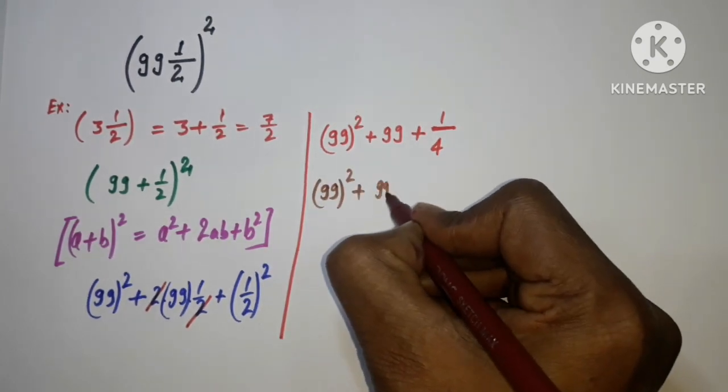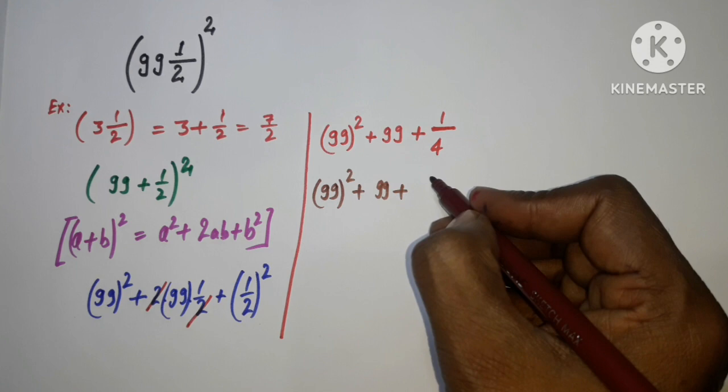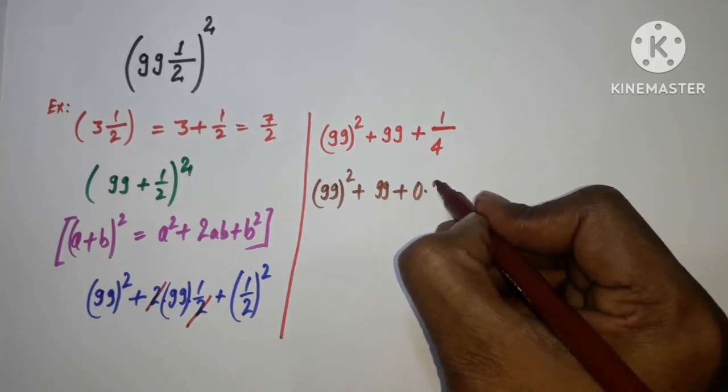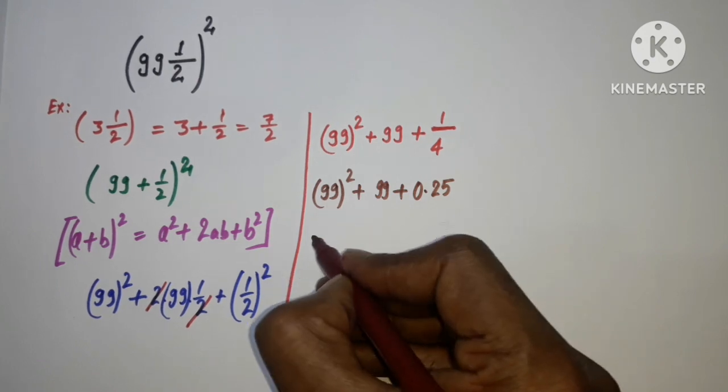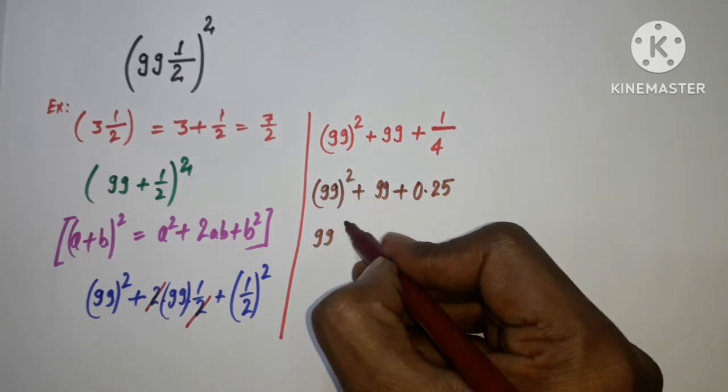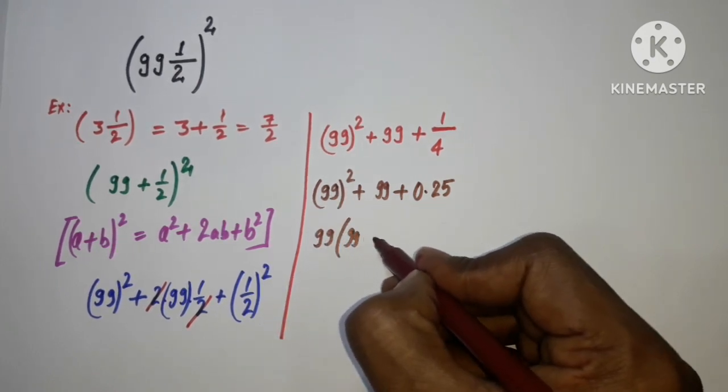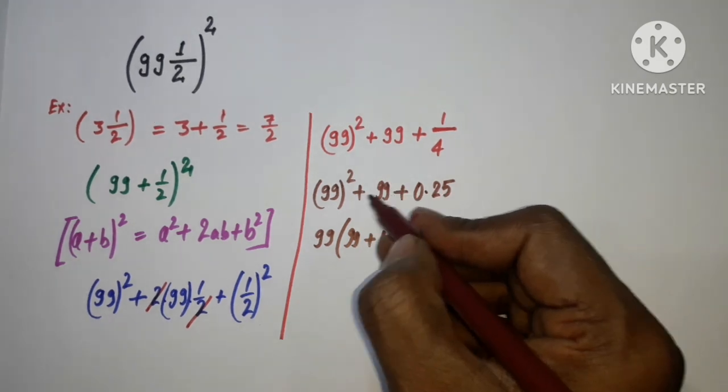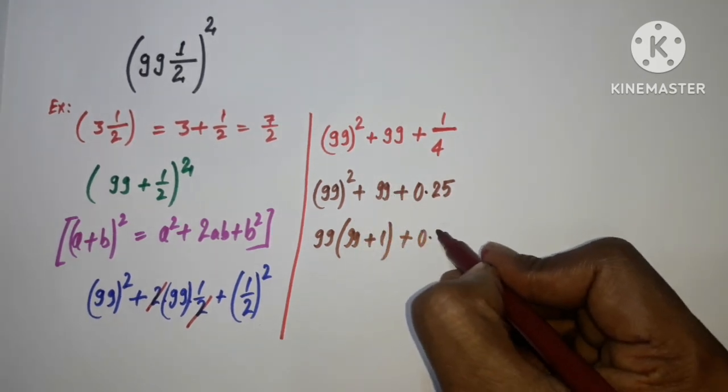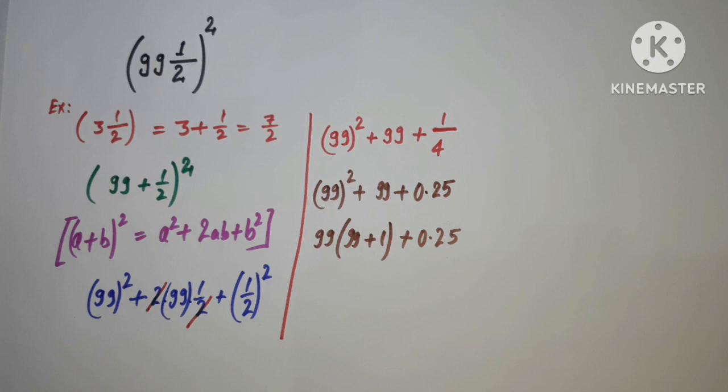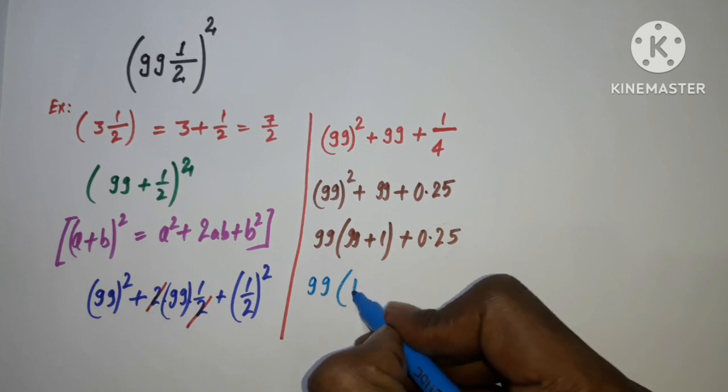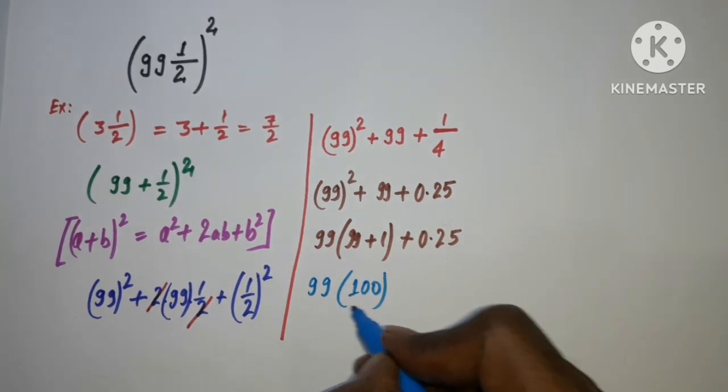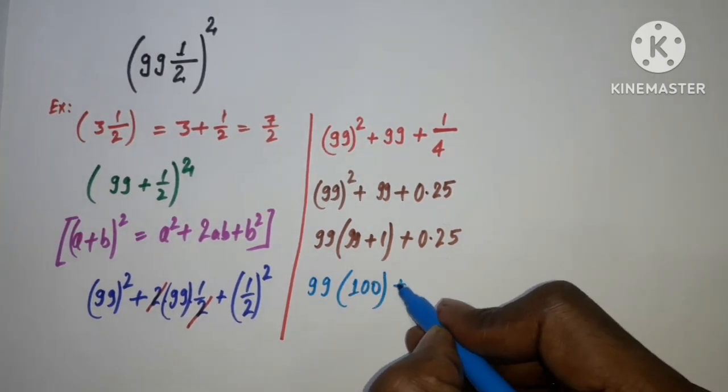The next step: (99)² is already there, 99, and 1/4 can be written as 0.25. Here I'm taking common and factoring out 99. We have 99 multiplied by (1 + 0.25). Obviously, 99 plus 1 is 100, so it's very easy to multiply.